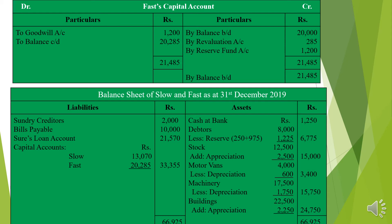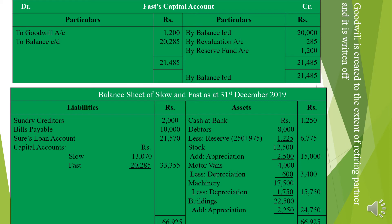Liability side: sundry creditors 2,000; bills payable 10,000; Sure's Loan Account 21,570; capital accounts — Slow 13,070 and Fast 20,285, total 33,355. Total liabilities: 66,925. Note: if it is not specifically given whether goodwill is written off or not, assume it is written off — meaning the continuing partners' capital accounts are debited and goodwill account is credited.